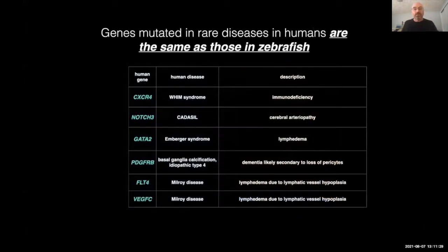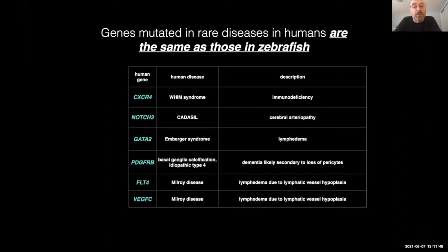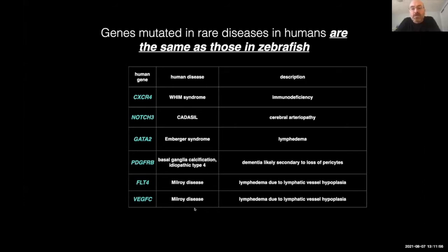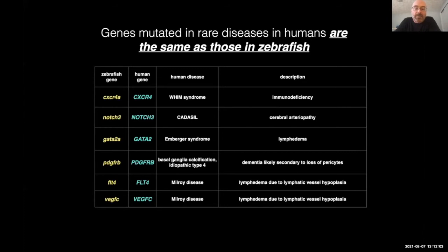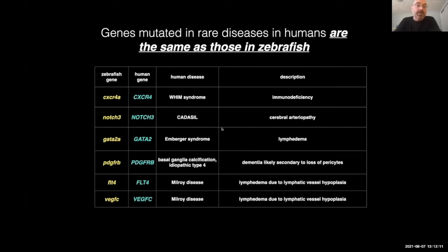This wouldn't be a good system if the genes weren't the same, but fortunately there's a high degree of conservation between fish and humans and mouse. More than 75 percent of human genes have similar versions in fish. The list I show here is of particular importance — these are human genes mutated in a variety of different rare genetic diseases, most related to the circulatory or lymphatic system. My lab has actually made mutations in the corresponding zebrafish genes, and in most cases the zebrafish with a mutated form of that gene have a similar phenotype.